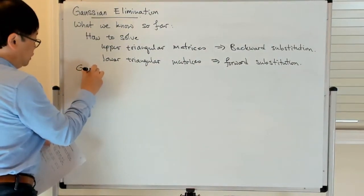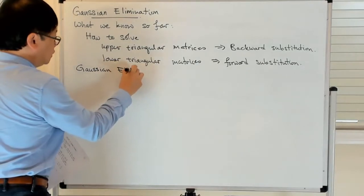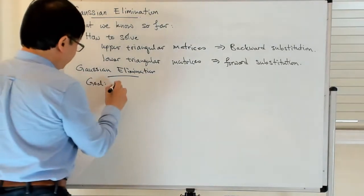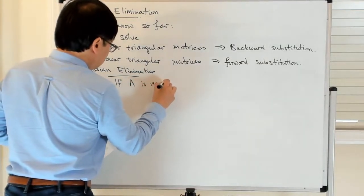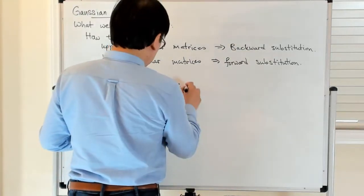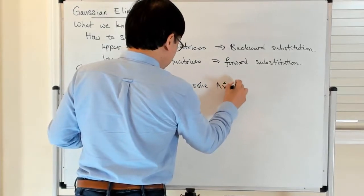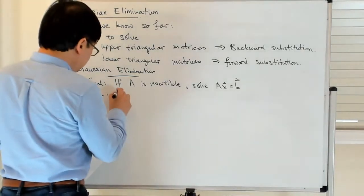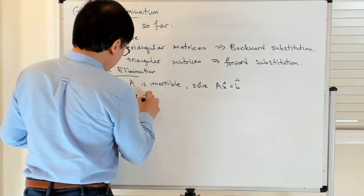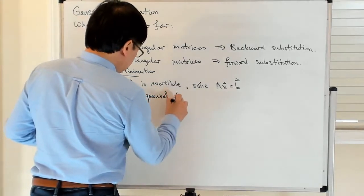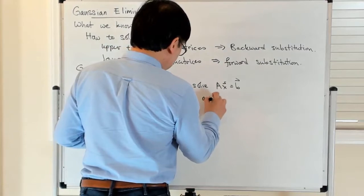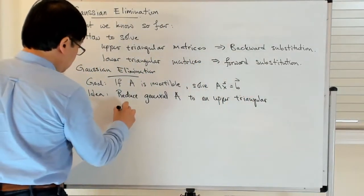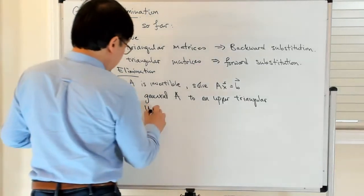So what Gaussian elimination does for you is the following. If A is invertible, we want to solve the linear system Ax equals B. The idea behind Gaussian elimination is that we're going to reduce this general matrix A to an upper triangular matrix U, and then apply back substitution.